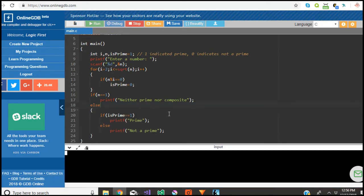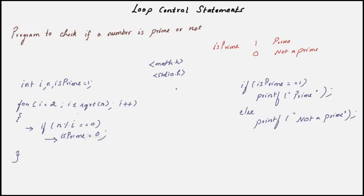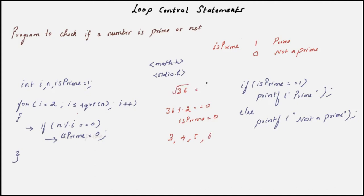Let's run the program. If you enter 6 we get the output as not a prime. If you enter 13 we get the output as prime. Now let's take the example of 36. When you enter 36, it starts with i equal to 2 and checks 36 mod 2, which is 0, so it sets isPrime to 0. Then it checks 36 mod 3, 36 mod 4, 5, up to 36 mod 6 — because the square root of 36 is 6. But do we have to do all these checks?